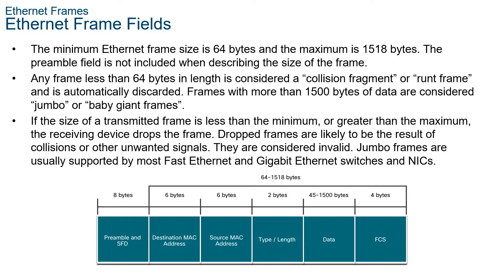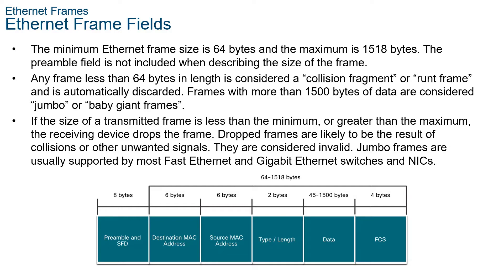Jumbo frames are usually supported by most Fast Ethernet and Gigabit Ethernet switches and NICs. Each field of the Ethernet frame is shown in the figure. The preamble is 7 bytes and the start frame delimiter or SFD — also called start of frame — is 1 byte, making 8 bytes total. These fields are used for synchronization between sending and receiving devices. The first 8 bytes of the frame get the attention of the receiving nodes, telling receivers to get ready to receive a new frame.